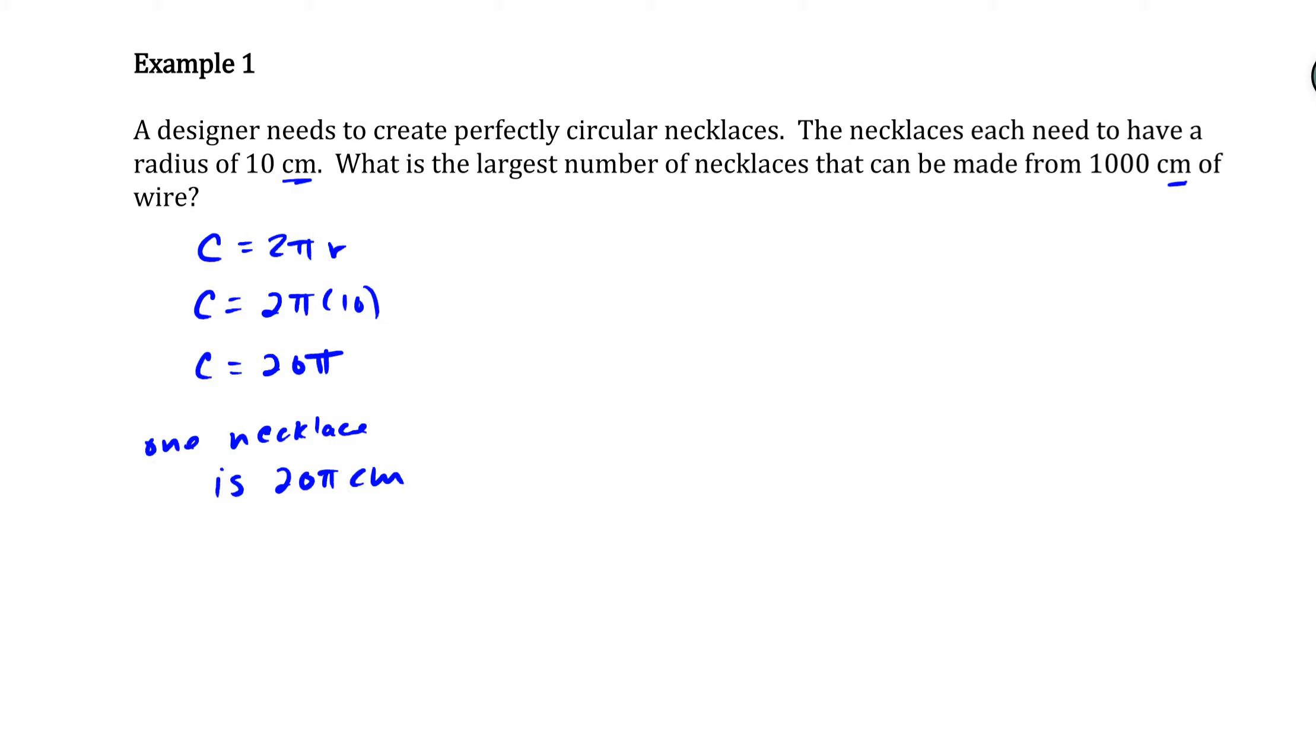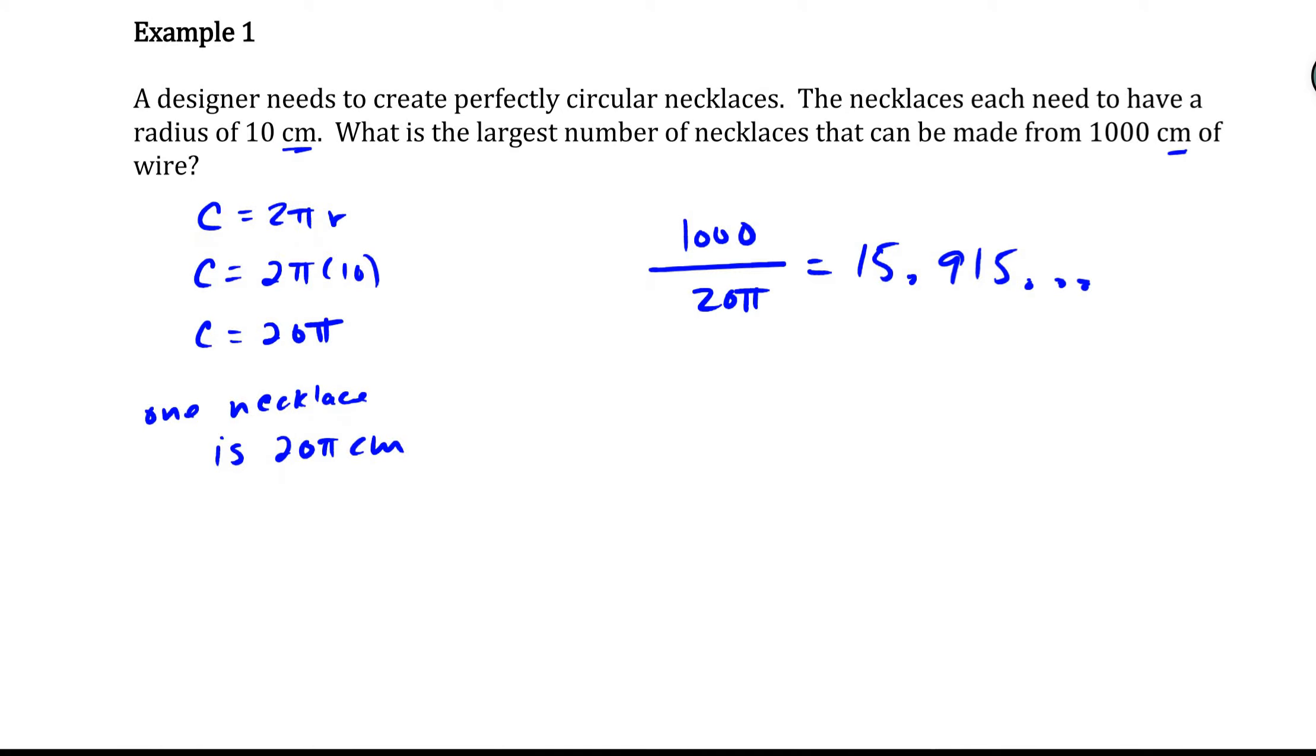So if I take my total amount of wire that I have, 1,000 centimeters, and divide it by 20π, that's going to tell me how many of these necklaces I can actually create. So if I divide 1,000 divided by 20π, I wind up getting 15.915 dot dot dot. Now, normally, if I was looking at that number and it wasn't in a word problem, we'd say we'd round that answer to 16. The problem is I can't round this to 16 because that would be adding to a number of pieces of wire that I just don't have. To make 16 necklaces, I would actually need more than 1,000 centimeters of wire. So for this problem, the maximum number of necklaces we can make is 15.